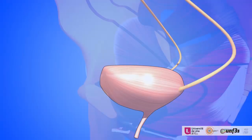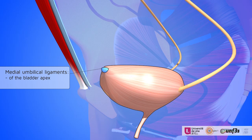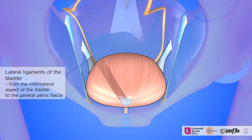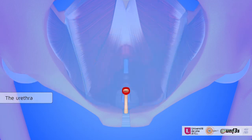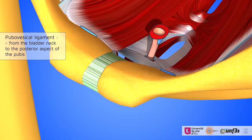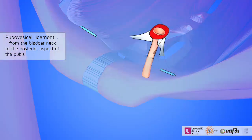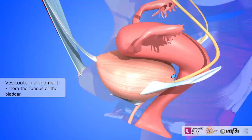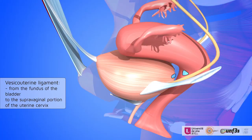The bladder is suspended by medial umbilical ligaments and laterally by bilateral ligaments. The urethra is suspended by the pubovesical ligaments, and posteriorly the bladder is linked to the uterus by the vesico-uterine ligament.